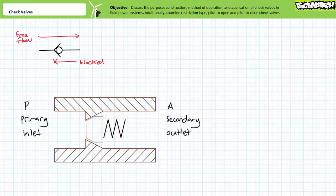Terminology differs from manufacturer to manufacturer. However, the direction of free flow dictates which port is assigned which identifier. The inlet can be called the primary or P port. The outlet can be called the secondary or A port.